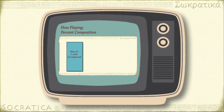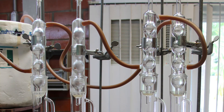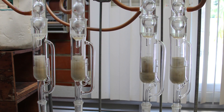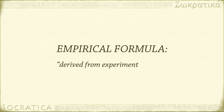In a previous video, we discussed how to determine the percent composition of a compound — this is a closely related idea. The percent composition data can be used to calculate the empirical formula. This is where the name empirical formula comes from: it means derived from experimental data. Let's see some examples.